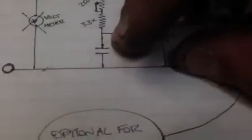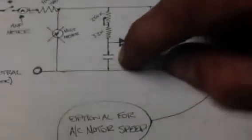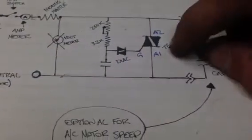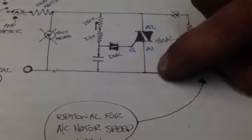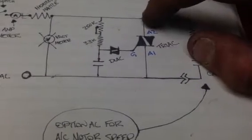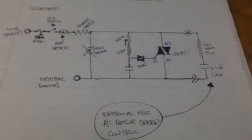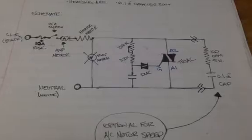On the neutral side off the other side of the DIAC there's a 0.1 microfarad capacitor and it goes to the neutral. A1 of the TRIAC goes to neutral. A2 of the TRIAC goes to line. And that's pretty much it. It's really straightforward. Like I said this is one of the easiest circuits you can do.